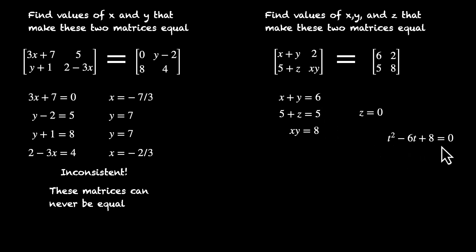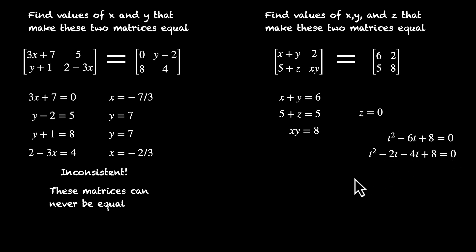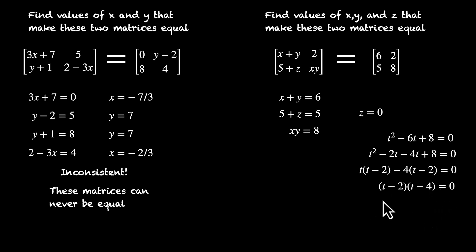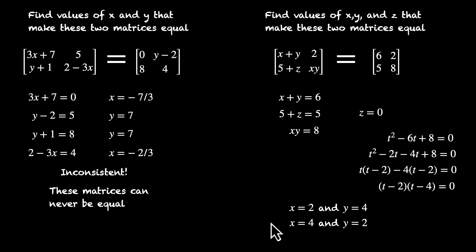We form the quadratic t squared minus 6t plus 8 equals 0, whose roots give us x and y. Splitting the middle term: t squared minus 2t minus 4t plus 8 equals 0, so t(t minus 2) minus 4(t minus 2) equals 0, giving (t minus 2)(t minus 4) equals 0. So t equals 2 or 4. Either x is 2 and y is 4, or y is 2 and x is 4. Both solutions work — x and y can interchange values. So z is 0, and x and y are 2 and 4.